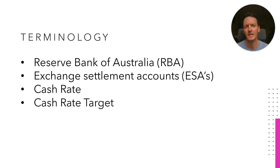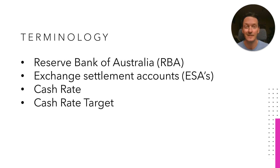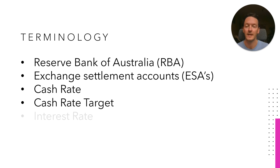Then you have a similar thing called the cash rate target. This is the thing that the Reserve Bank of Australia is aiming for — there's a particular price of money that the Reserve Bank is aiming for the banks to exchange with each other, and that's called the cash rate target. When you hear the cash rate being talked about in the media, it's usually the cash rate target they're actually referring to, because the actual price that financial institutions exchange with one another might be a little bit different to what the target is.